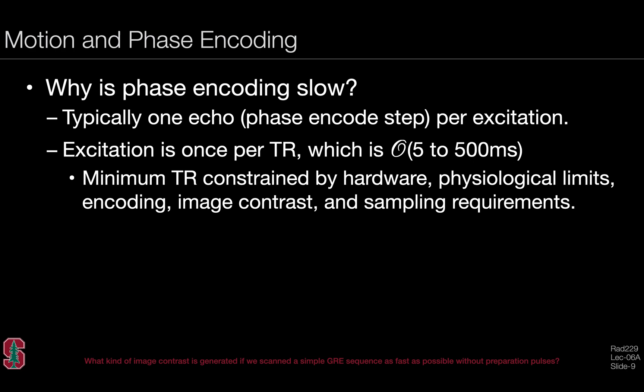Why is phase encoding slow? Typically one echo, that is one phase encode step, is acquired per excitation. The excitation only happens once per TR for a typical sequence, which is on the order of about five or even as long as 500 milliseconds. The minimum TR, that is how quickly we obtain individual echoes, is constrained by many things, including hardware, physiologic limits, encoding specifications, desired image contrast, and sampling requirements.